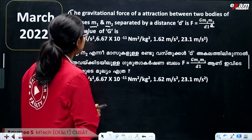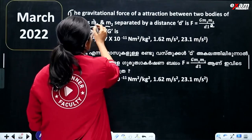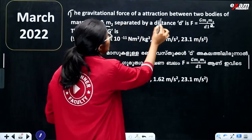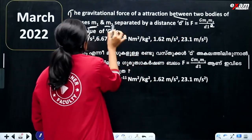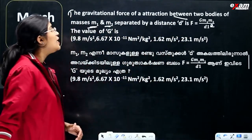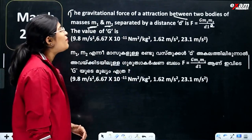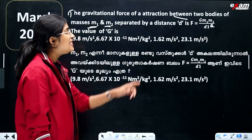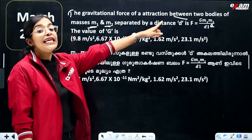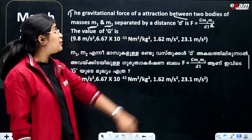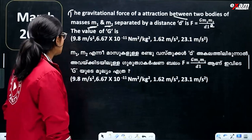The gravitational force of attraction between two bodies of mass M1 and M2 separated by a distance D is F, which is equal to G M1 M2 divided by D squared.